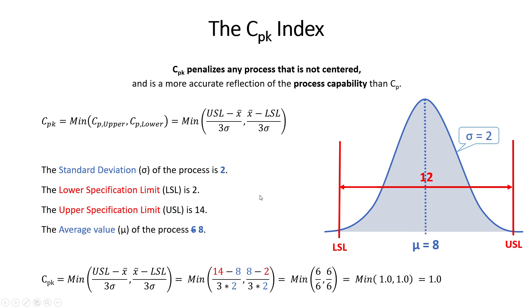If you're looking to calculate or quantify process capability, you should always use CPK and not CP, because CP is more about the potential of your process, not the actual process capability.